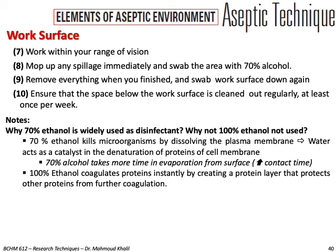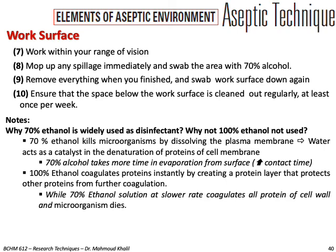Ethanol coagulates proteins suddenly by creating a protein layer that protects other proteins from further coagulation. This is why 70% ethanol solutions have a slower rate of coagulation of cell wall proteins — allowing the microorganism to die properly.